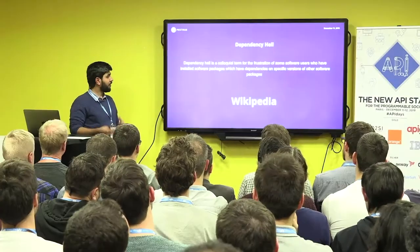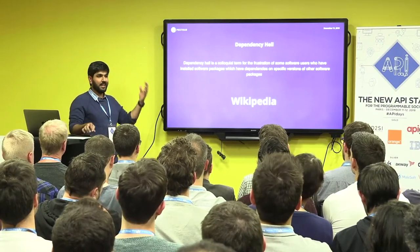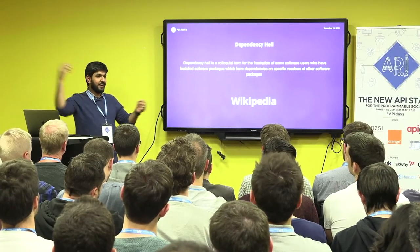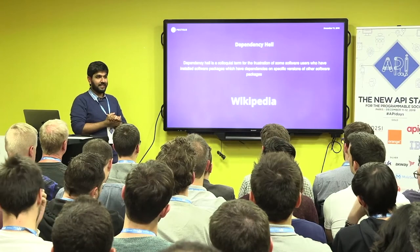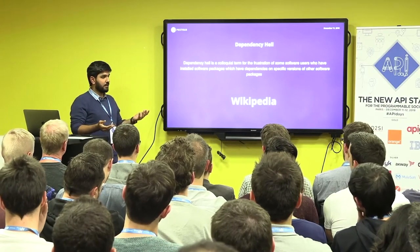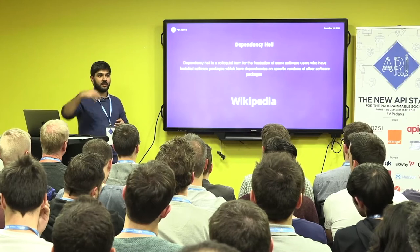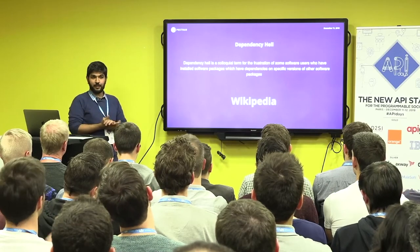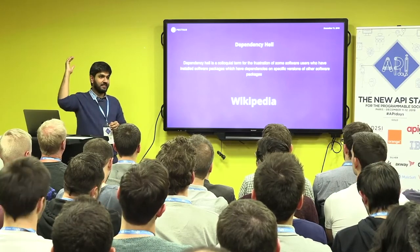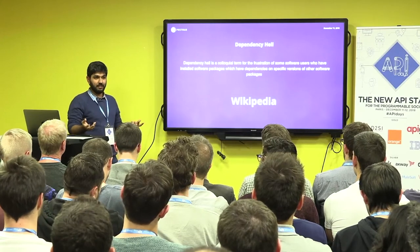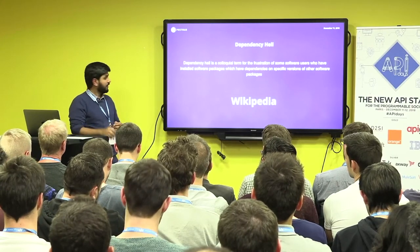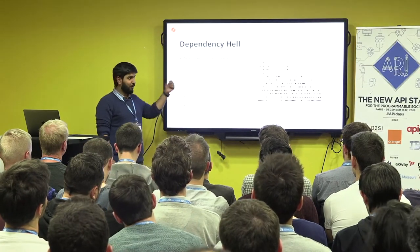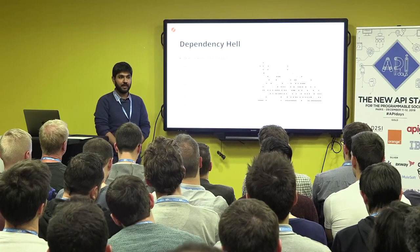Dependency hell comes from the software package world — think NPM — in which I have a module dependent on other modules, that is dependent on other modules, and so on. You face issues in production where the system stops working because there is a circular dependency across 100 different nodes connected together. Security is another aspect: if you have a sub-dependency 100 levels down with a security vulnerability, you don't even know you're directly dependent on it. Extended to distributed architectures, you fall into what is called dependency hell of microservices.